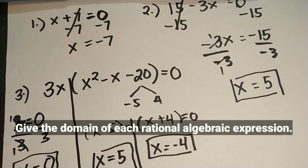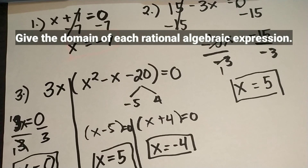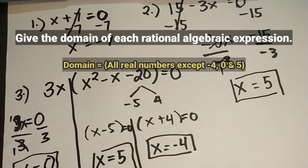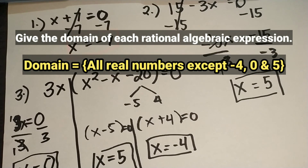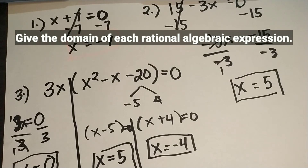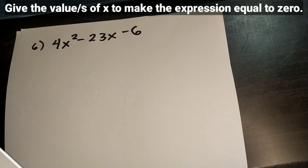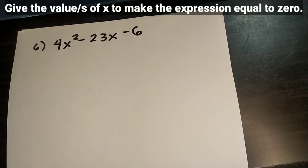For Number 3, if the denominator is 3x times the quantity x squared minus x minus 20, the domain is equal to all real numbers except 0, 5, and negative 4.